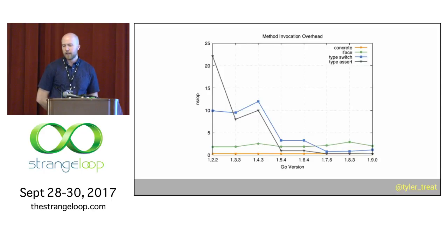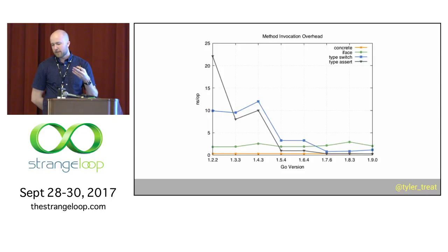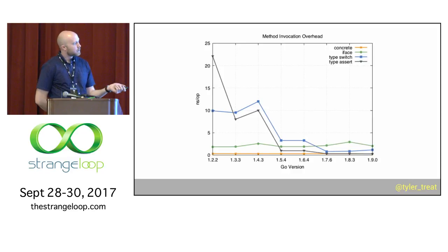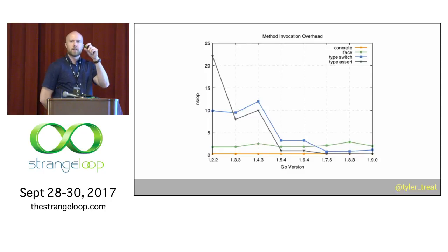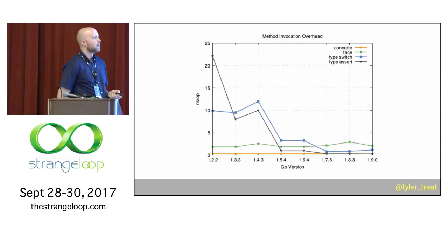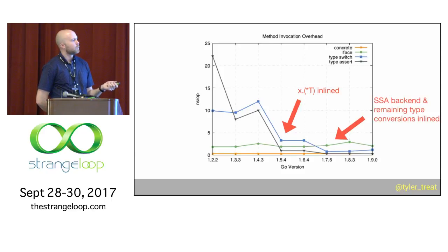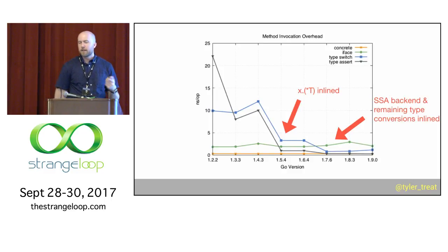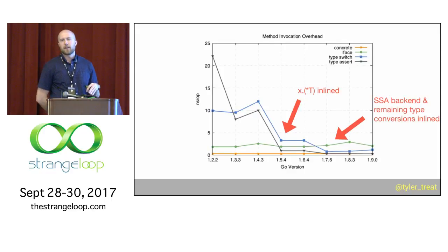Looking at the performance of method invocations across different releases of Go: calling a method on a struct directly is the fastest and basically constant. The interface adds a little bit of overhead, also roughly constant. What's changed a lot is the performance of type conversions — using a type assert or type switch to convert from the interface to the concrete type. In Go 1.5, the conversion to the concrete type pointer was inlined directly into the runtime. In 1.7, the static single assignment backend and remaining type conversions were inlined. Now doing a type conversion and calling the method is basically on par with calling a method directly on a struct.